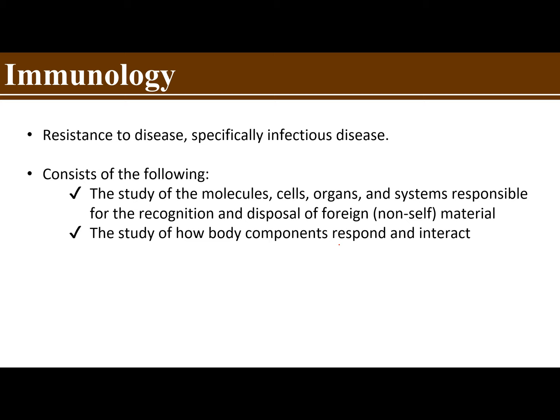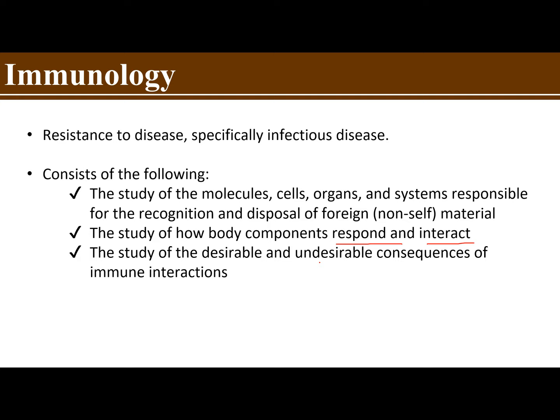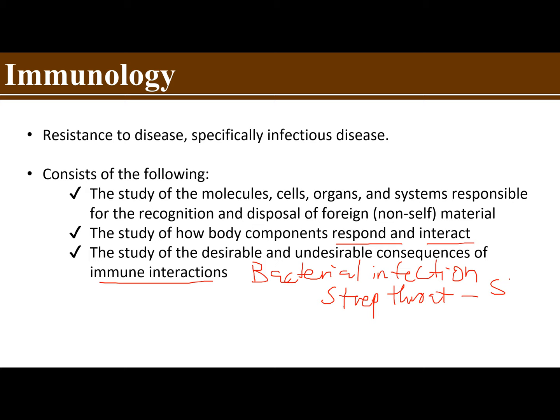Immunology also refers to the study of how body components would respond and interact — the study of the desirable and undesirable consequences of immune interaction. For example, if you have a bacterial infection, say a strep throat, this could be caused by Streptococcus pyogenes, and your body would activate its immune system. One of the cells involved is your neutrophils.